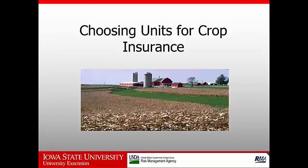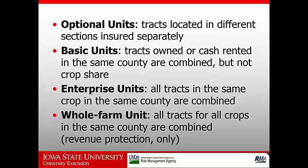Every winter, crop farmers have to make a decision about what kind of crop insurance policies they're going to buy this year. One of the aspects of that decision is what units they want to put into their crop insurance policy. We have several choices, ranging from optional units, which insure very small parts of the total operation, to whole farm units, which as the name implies, is one policy for the entire farm.